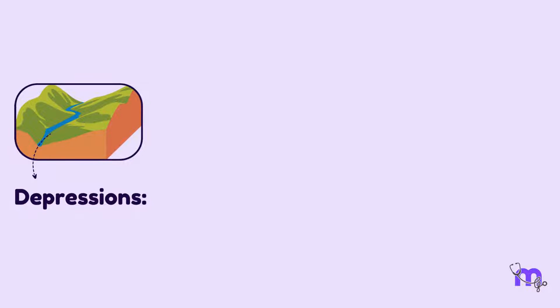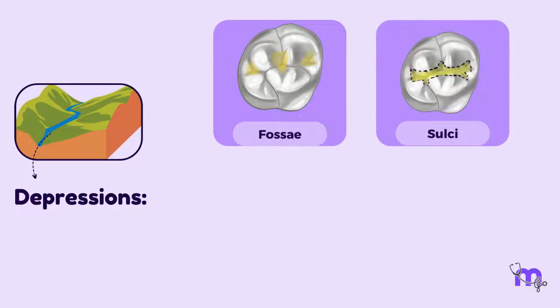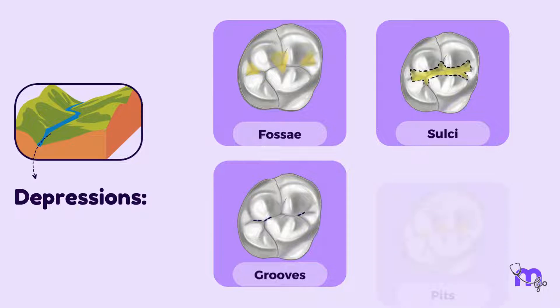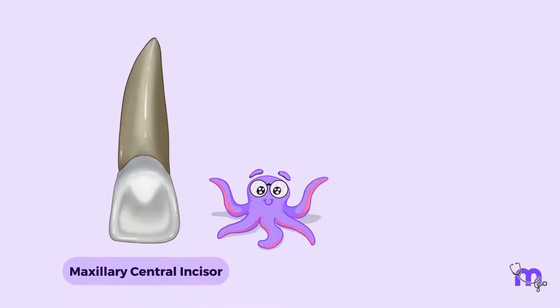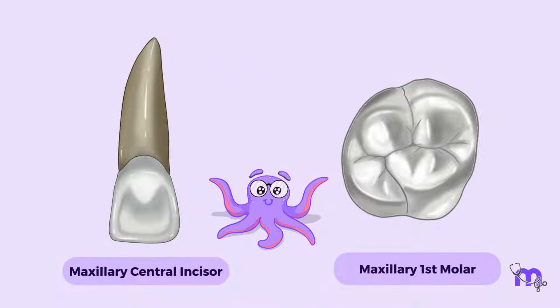Now, let us delve into the types of depressions. There are four main depressions or concavities that we see on the tooth surface. They are the fossa, sulcus, groove and pit. Let us take the same example of the maxillary central incisor and the maxillary first molar.